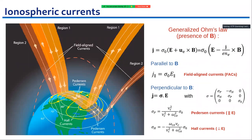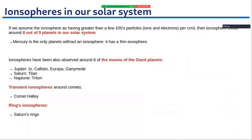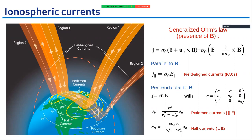Perpendicular to B, we have two types of currents. In the direction parallel to the electric field we have Pedersen currents, and in the direction perpendicular to E we have Hall currents. These field-aligned, Pedersen, and Hall currents connect the magnetosphere with the ionosphere and close the current system in the magnetosphere, including during magnetic storms.